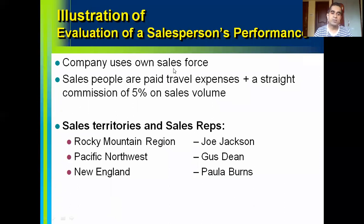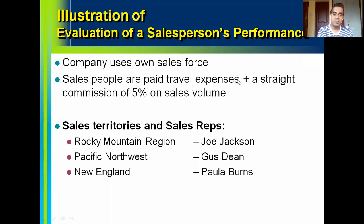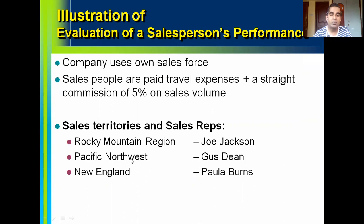The company uses its own sales force. Salespeople are paid travel expenses plus a straight commission of 5% on sales volume — commission means incentive in India. There are three sales representatives: Joe Jackson is allocated the Rocky Mountain region, Gus Dean is allocated the Pacific Northwest, and Paula Burns is allocated New England.